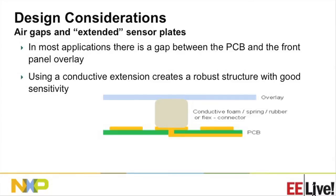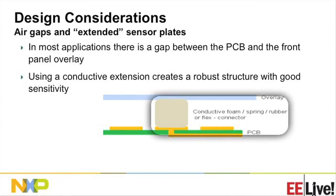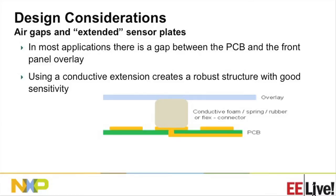Another aspect is air gap. In most applications there is an overlay, but the actual sensing PCB may not be near the overlay — it may be sitting way inside, like on your phone where the sensing PCB might not be directly connected to the glass. In that case, in order to still have robust detection, you might need to use some sort of conducting foam, spraying, or a flex cable, which will transmit your touch or that change in capacitance all the way to the PCB. Otherwise, if there is just air, you may not be able to detect. It's very important that your sensor PCB is actually receiving the signal from your overlay layer, depending on the gap between those two.